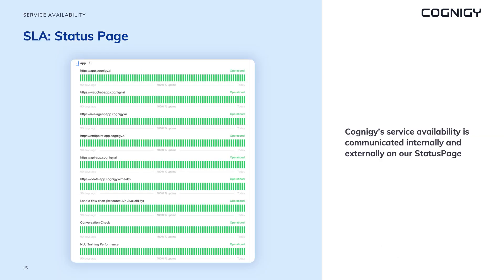Service level agreements, or SLAs, are contracts that define the level of service a customer can expect from a supplier. Cognigy uses SLAs and service level indicators to ensure customers receive the service they expect. Service availability — the percentage of time a service is available during a given period — is one of the most important indicators. We use a status page to communicate our SLAs externally, allowing customers to track the availability of Cognigy services and providing a mechanism for communicating any issues or scheduled maintenance.